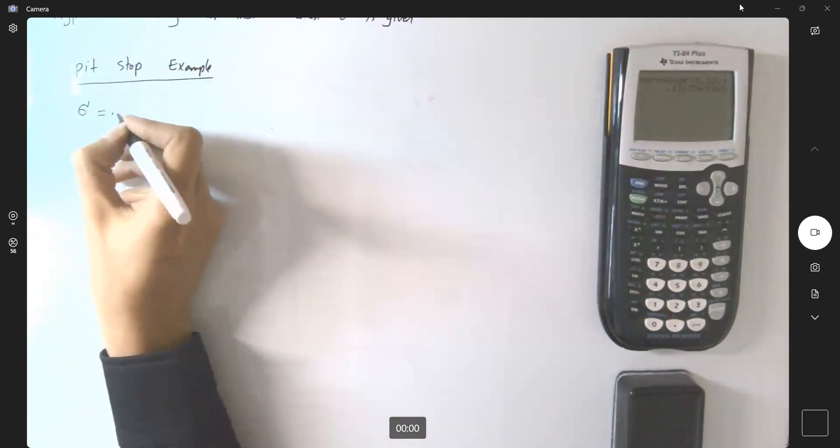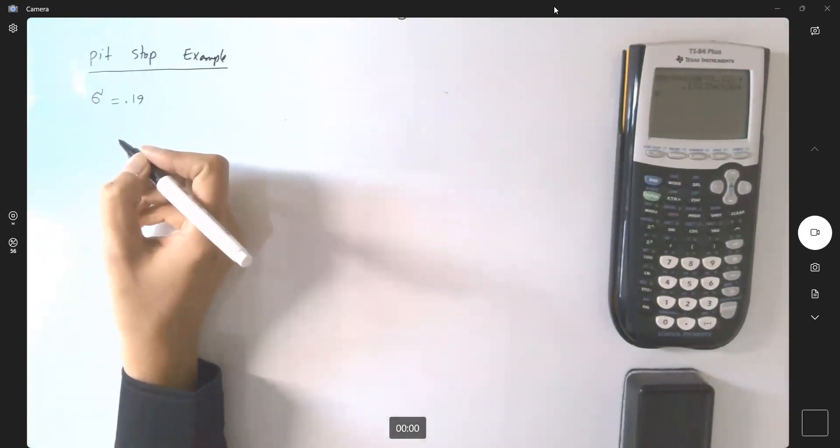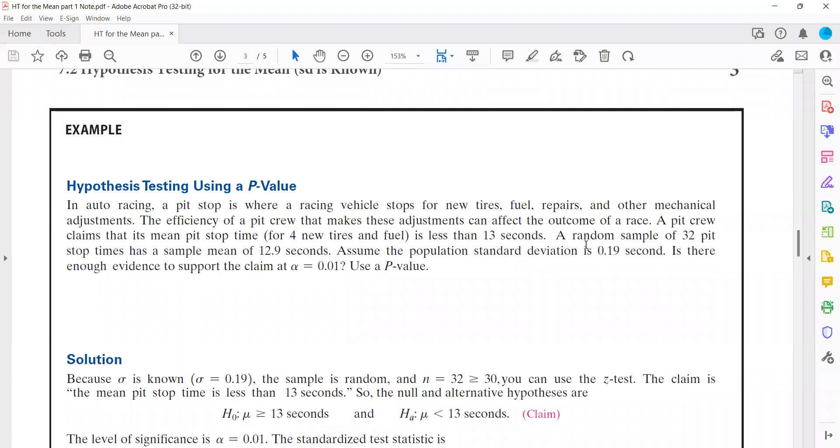Sigma is given to us as 0.19 seconds. Remember that. Go back to the question. The question is right here. It says from past studies, you have population standard deviation, which is 0.19, right?